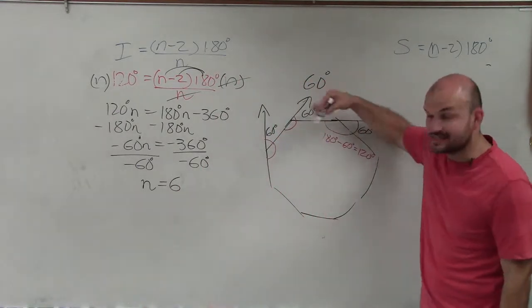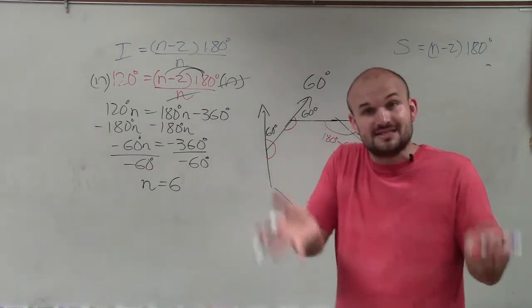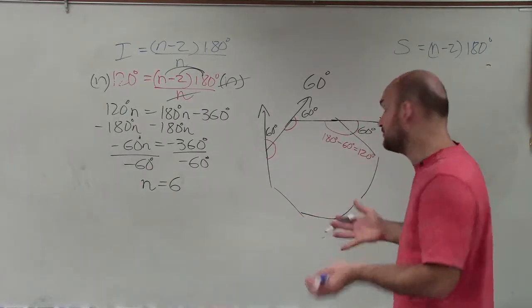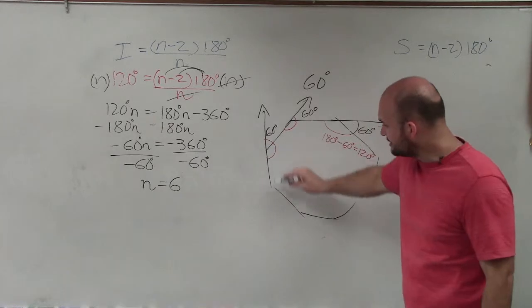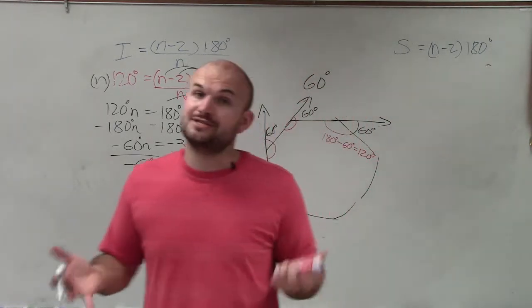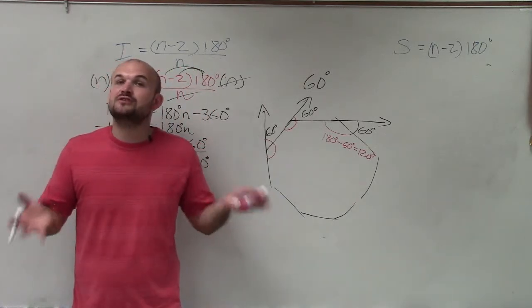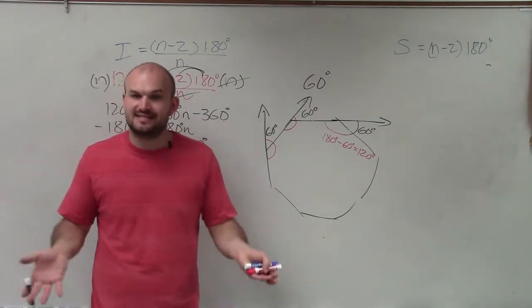We know that this is a regular polygon, meaning all the exterior angles are exactly the same, because all the interior angles are exactly the same for a regular polygon. So if I know all the exterior angles are 60 degrees, we have to remember that the sum of all exterior angles, no matter what type of polygon you have, is always going to be 360 degrees.